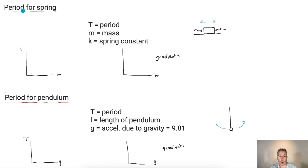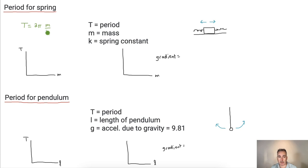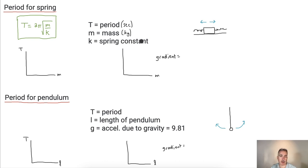Now we can write the equation for the period of a mass on a spring undergoing simple harmonic motion. The equation is T equals two pi times the square root of m over k. You don't have to memorize it — it's in your data booklet. The period is in seconds, mass is in kilograms, and the spring constant k has units of newtons per meter, which you can see from Hooke's law f equals kx, giving k equals f over x.